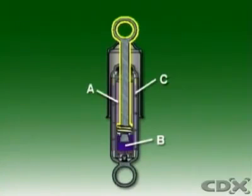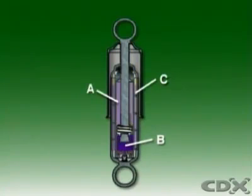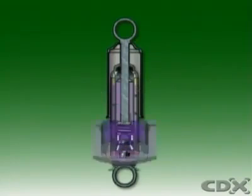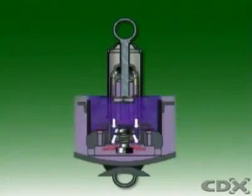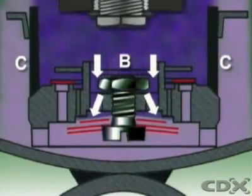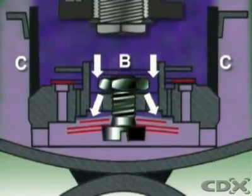But the piston rod is also now entering chamber A and displacing a quantity of fluid equal to its volume, so all of the oil in B cannot flow into A. The displaced fluid is forced down through a base valve and out into the reservoir labeled C.